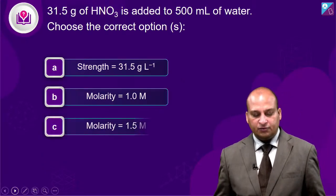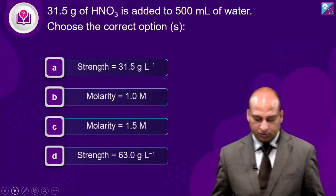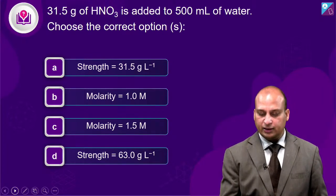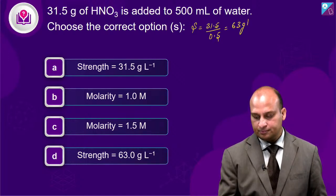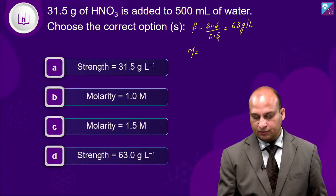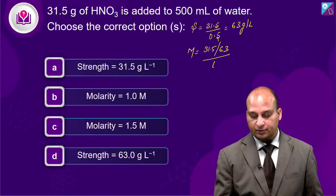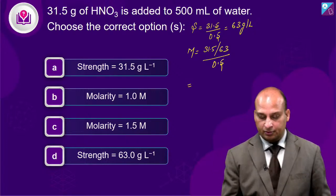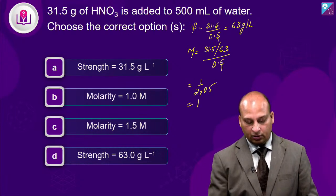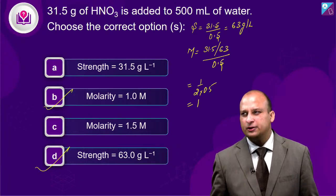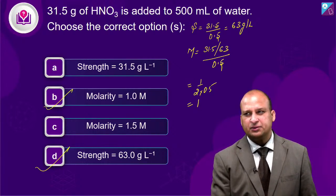Next question: 31.5 grams of HNO₃ is added to 500 mL of water — choose the correct option. We need to find strength and molarity. Strength: 31.5 grams upon 0.5 litres = 63 gram per litre. Molarity: 31.5 divided by 63 (molar mass) upon 0.5 litres = 1 by 2 into 0.5 divided by 0.5 = 1 molar. So molarity is 1 M and strength is 63 gram per litre. Both B and D are the correct answers.